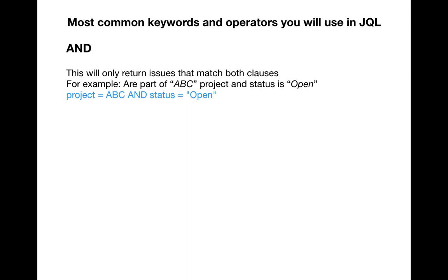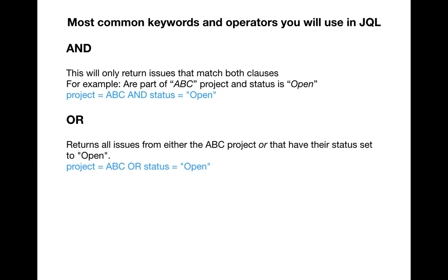So you'll write: project is equal to ABC AND status is equal to open. That's the query you write in the advanced search. When you do basic search and select values in the drop-down, in the background it also uses AND to combine the smaller queries, so basic search uses JQL and the AND keyword to filter out the results.